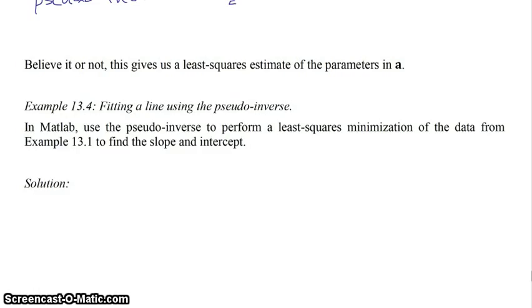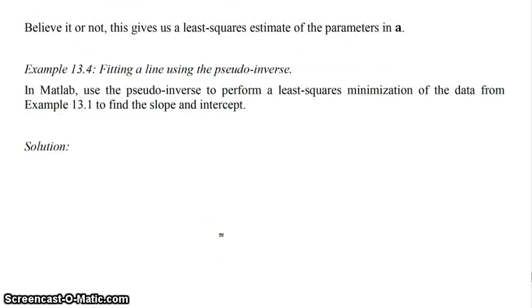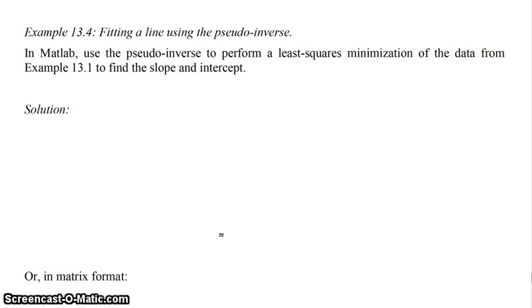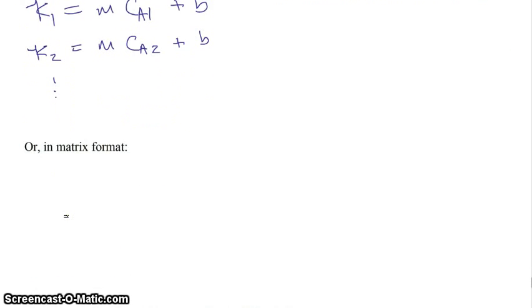And so if we were going to do this on a system that we've already studied, this y equals mx plus b, we will actually get exactly the least squares estimate of the two parameters in A. In that case, it would be M and B. And so in the next example, we are going to take a look at that. So in this example, what we want to do is we want to use the pseudo-inverse to perform a least squares minimization of the data from our previous example, example 3.1, to find the slope and the intercept.